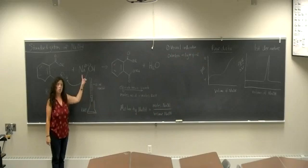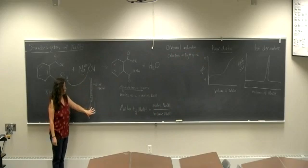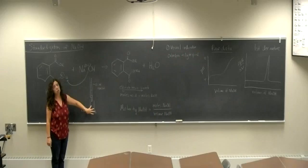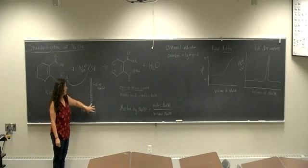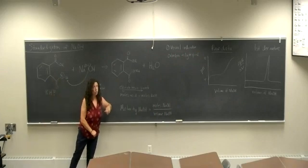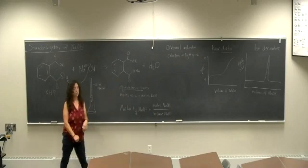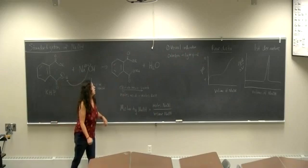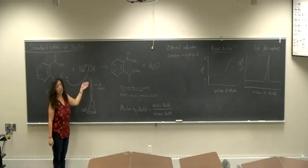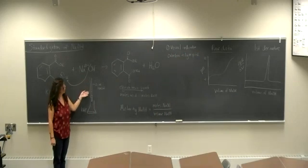So you'll have your KHP with a couple of drops of phenolphthalein in here. It'll be colorless as you're titrating the NaOH. As soon as that light pink color persists, that means you're at the endpoint of your reaction. So just slightly past the equivalence point there.